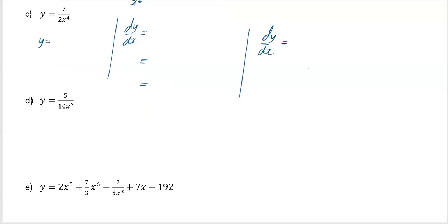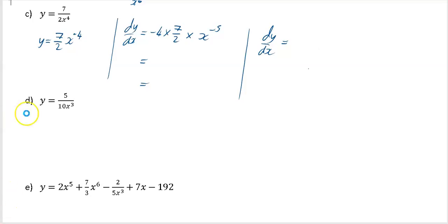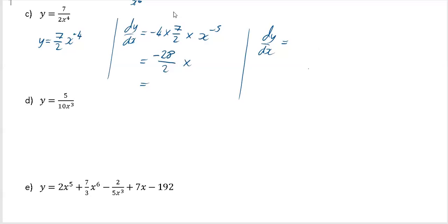There's a bit more work in this example. First, get it into index form: it's going to be seven over two times x to the minus four. When differentiating, multiply by your power: minus four times seven over two, and reduce the power by one to minus five. That gives minus 28 over two times x to the minus five. Converting x to the minus five to one over x to the five and cancelling gives minus 28 over two x to the five, which simplifies to minus 14 over x to the five.